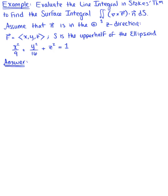Evaluate the line integral in Stokes' theorem to find the surface integral of Stokes' theorem. Assume that the vector normal to the surface is in the positive z direction. We're given the vector field F with components x, y, z, and we have that S is the upper half of the ellipsoid x²/9 + y²/16 + z² = 1.